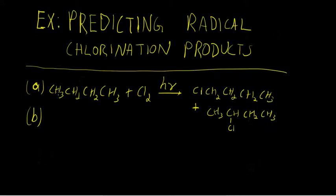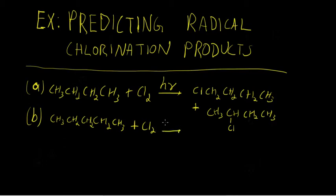Let's say the alkane were pentane instead of butane — we have an additional CH₂ group. With this mixture irradiated, you could have substitution at one of the terminal carbons, substitution at either C2 or C4 (which are equivalent secondary carbons), or substitution at C3, which is also a secondary carbon. So you'll get three possible products in this instance.